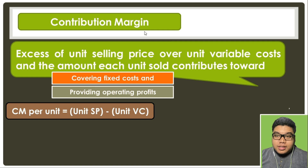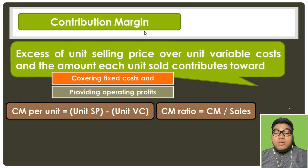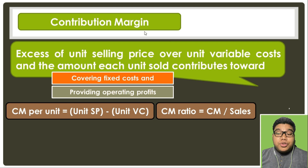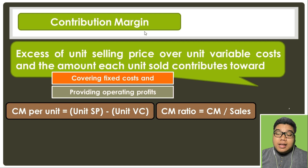The formula for contribution margin per unit is: unit selling price minus unit variable cost. To determine the contribution margin ratio, we take contribution margin per unit divided by sales, which can also be restated as unit selling price less unit variable cost, all over sales.